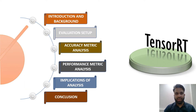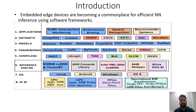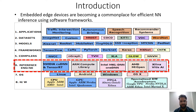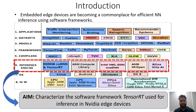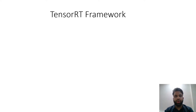Many embedded devices are becoming very common for efficient inference, and many vendors have provided different inference engines for efficient CNN inference. As you can see in the figure highlighted in a dotted red box, we have different CNN inference engines from different vendors — Nvidia's TensorRT, Intel's MKL-DNN, AMD's Xilinx, and ARM's inference engines. However, the main aim of this paper is to analyze the software framework proposed by Nvidia, which is TensorRT, on their edge devices.